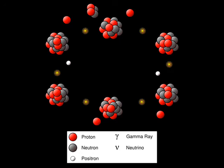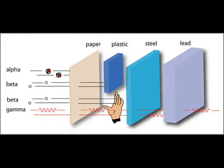Gamma rays are a form of electromagnetic radiation, or light, emitted at high frequencies produced by subatomic particle interactions such as electron-positron annihilation or radioactive decay. Gamma rays are generally characterized as electromagnetic radiation having the highest frequency and energy.